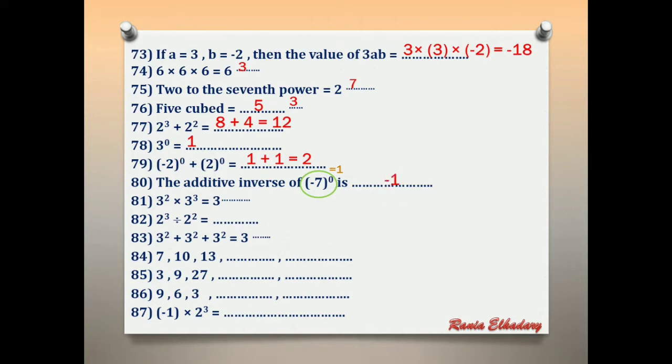Number 81: 3 power 2 times 3 power 3. When the bases are equal and we multiply, we add the powers. 3 power 2 × 3 power 3 = 3 power (2+3) = 3 power 5.